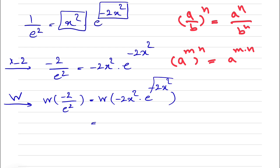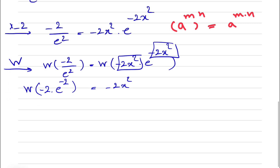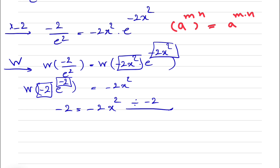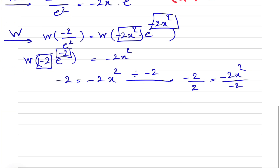From the right side, we're going to get the box, which is minus 2x squared. And from the left side, e squared can go into the denominator and it will be e to the power of minus 2. Looking at the left side, we'll see that we have Lambert W function of minus 2 times e to the power of minus 2, which gives another box. So minus 2 would basically be equal to minus 2x squared. We just divide by minus 2 on each side, and we can cancel this out.